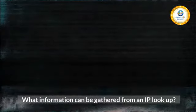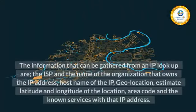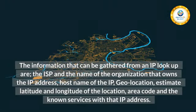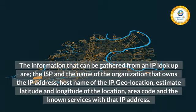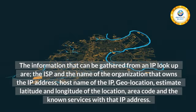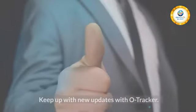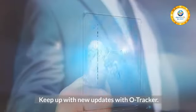What information can be gathered from an IP lookup? The information that can be gathered from an IP lookup includes the ISP and the name of the organization that owns the IP address, the hostname of the IP, geolocation, estimated latitude and longitude of the location, area code, and the known services associated with that IP address. Keep up with new updates with O-Tracker.